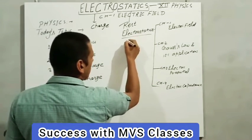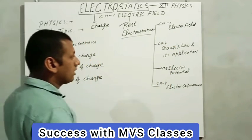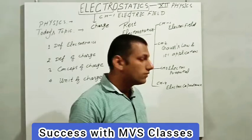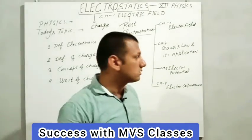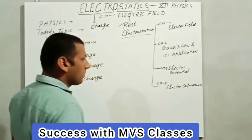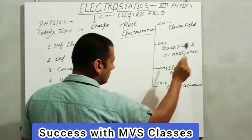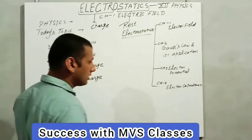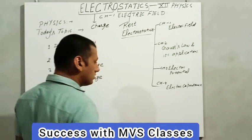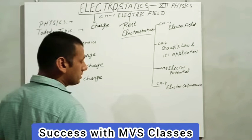There are four chapters included in RBSC physics syllabus: first is electric field, second is Gauss law and its application, third is electric potential, and fourth one is electric capacitance.